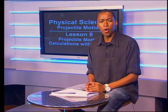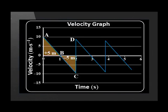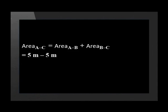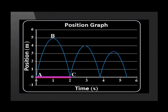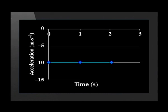Our last question covers the combined interval A to C. We are asked to calculate the object's displacement and to draw an acceleration-time graph for the motion. To find the displacement from A to C, we add the areas of the two triangles shown. The answer is obviously zero meters — the ball ended where it started, as is clear from the position-time graph since the ball was on the ground at both points A and C. Finally, we draw an acceleration-time graph. The gradient of line A to C is constant at negative 10 meters per second squared, and the interval A to C lasts two seconds, so we plot an acceleration of negative 10 meters per second squared for two seconds.